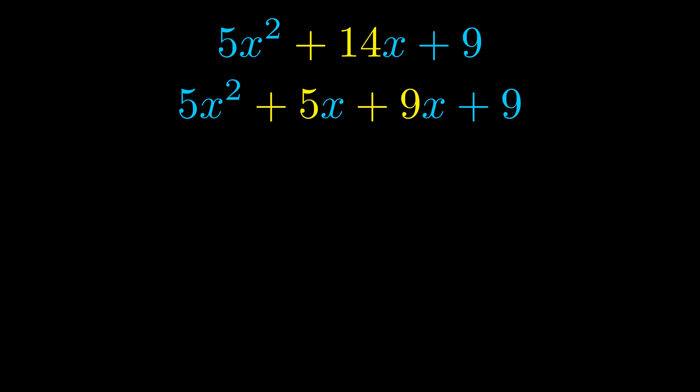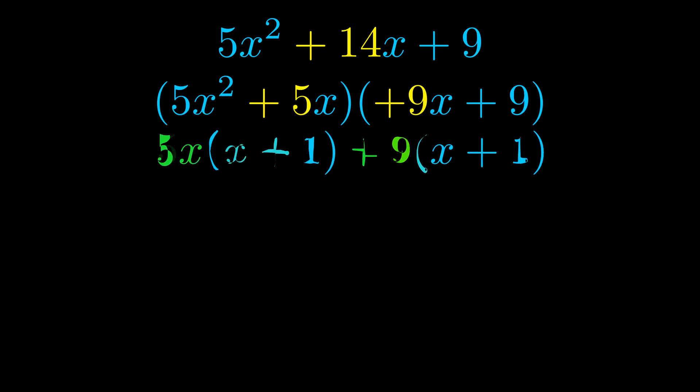Once we've done this we go ahead and we put parentheses around the first term and the last term. And we do that so that we can take the greatest common factor out of both terms. We can see the greatest common factor is now outside in green.